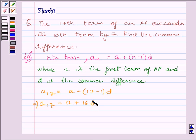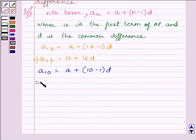Similarly, we can find the 10th term. So we can write A10 is equal to A plus (10 minus 1) multiplied by D. This implies the 10th term of the AP is equal to A plus 9D.